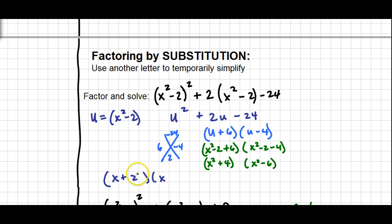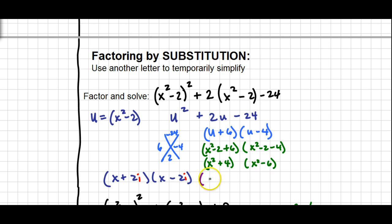For x²+4, be careful — if we try x plus and minus 2, we'd get negative 4, not positive 4. To get a positive result here we need to incorporate i's. For x²−6, we don't know the square root of 6, so we just leave it — we say (x + √6)(x − √6). If it had been 9, we would have used 3. Since we don't know the square root, we just leave the symbol.